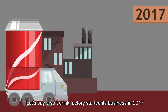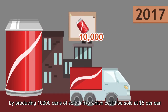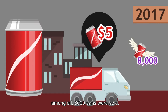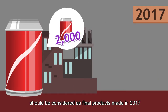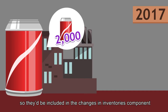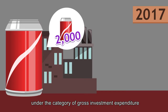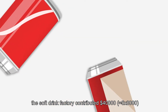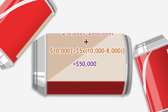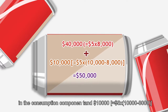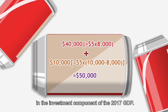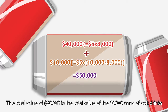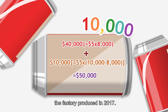Let's say a soft drink factory started its business in 2017 by producing 10,000 cans of soft drinks which could be sold at $5 per can. Among all, 8,000 cans were sold. The remaining 2,000 cans should be considered as final products made in 2017, so they'd be included in the changes in inventories component under gross investment expenditure, which is part of the 2017 GDP. Therefore, the soft drink factory contributed $40,000 in the consumption component and $10,000 in the investment component of the 2017 GDP.